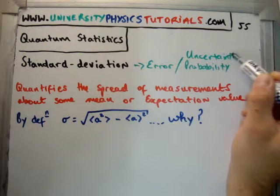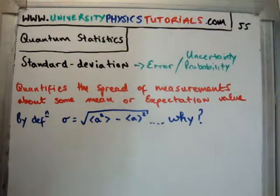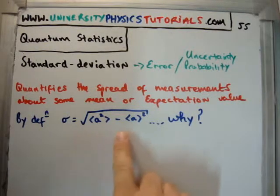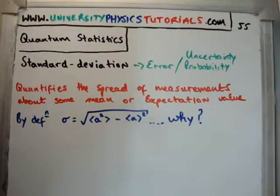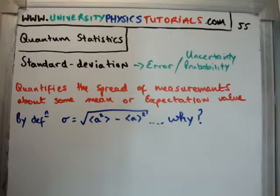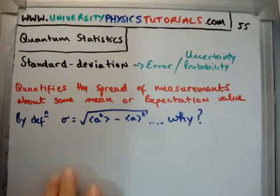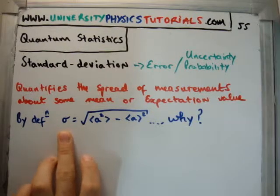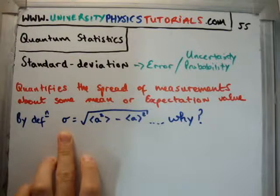So, you'll see this in the derivation of the uncertainty principle. You'll require this particular formula down here. The standard deviation quantifies the spread of measurements about some mean or expectation value. Okay, that's the definition of the standard deviation. Now, the formula that I'm going to show you is that sigma is the placeholder I'm going to give for standard deviation.